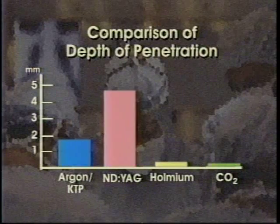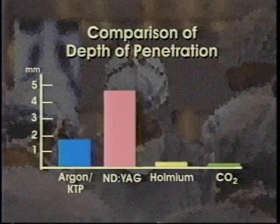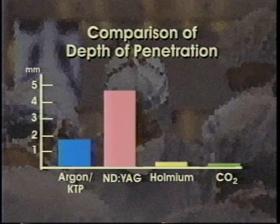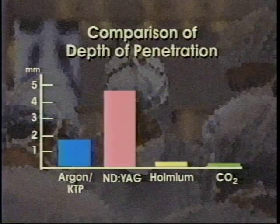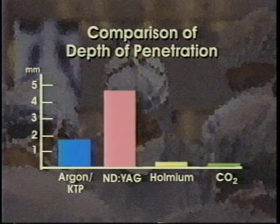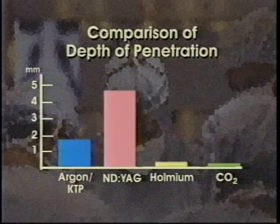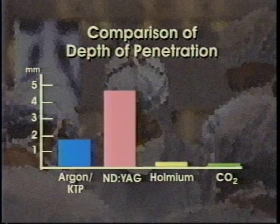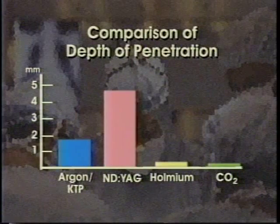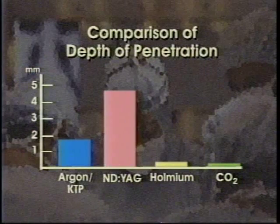With the holmium laser, the depth of penetration is only approximately 0.5 millimeters, which makes it ideal for superficial tumors. CO2 lasers cannot be used in the bladder because of technical considerations, such as an inability to transport the CO2 laser beam through a fiber optic cable.